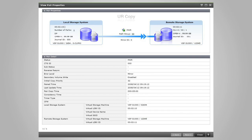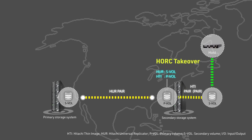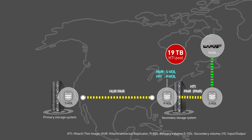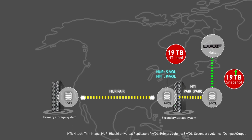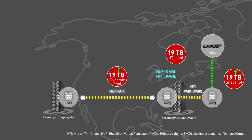Now let's move on to the license capacity usage for Universal Replicator and Thin Image shared volume configurations. When a Universal Replicator SVOL is used as a Thin Image PVOL, the HTI pool consumes license capacity from both Dynamic Provisioning and Thin Image. For example, when you create a 19TB HTI pool, the license capacity usage for Thin Image increases by 19TB, and the license capacity usage for Dynamic Provisioning also increases by 19TB. This usage does not change when snapshots are created.